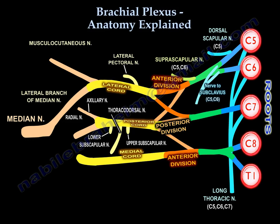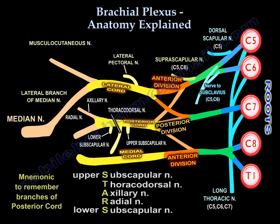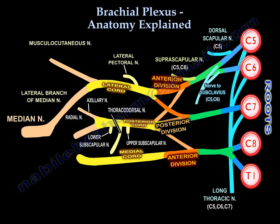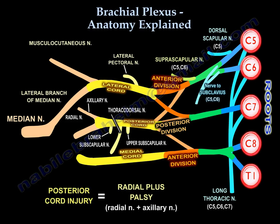Some people use the word STARS to remember the branches of the posterior cord. In a posterior cord injury, you will have radial nerve palsy — wrist drop — plus axillary nerve palsy.